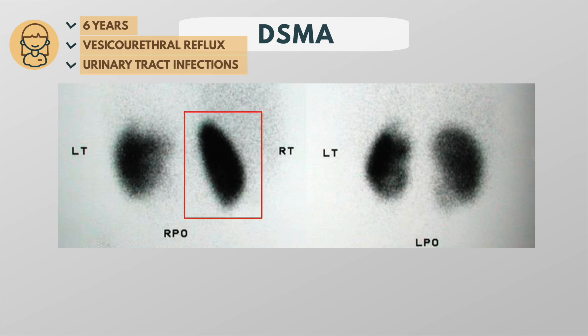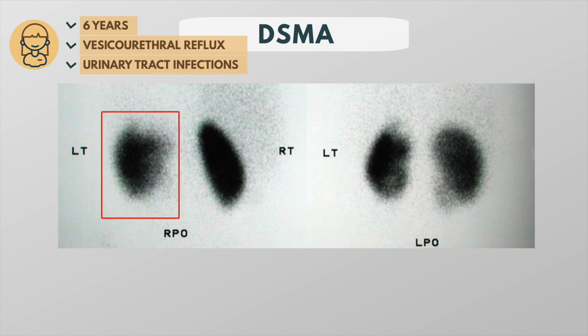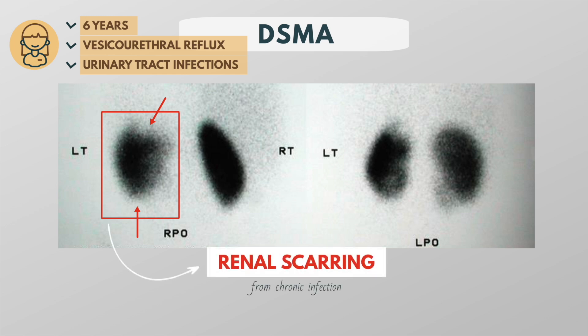The patient's right kidney is smooth and bean-shaped. The left kidney, on the other hand, is irregular — it looks as if someone took a bite of the upper pole, and the lower pole is a bit irregular too. Since this is a scan from a six-year-old girl with known vesicoureteral reflux and multiple urinary tract infections, renal scarring from chronic infection is the most likely diagnosis.